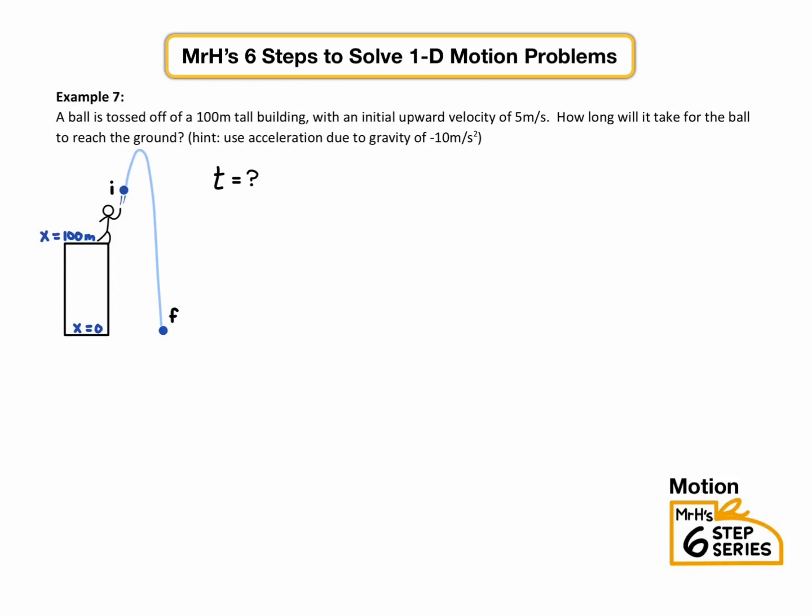All right, we're going to do one more example here. In this example, a ball is tossed upwards with an initial velocity of 5 meters per second off of a 100 meter tall building. They're asking, how long will it take to reach the ground? So T equals question mark, because they're asking for time, how long does it take to reach the ground? Then in your picture, you know, you draw a picture of somebody throwing a ball upwards, and it eventually falls down to the ground. Make sure to label your picture with coordinates and time frame.